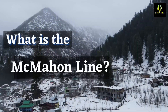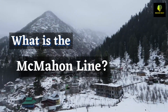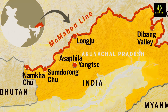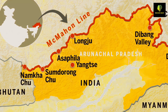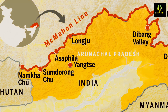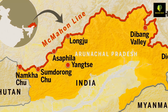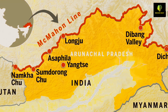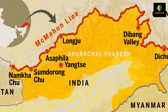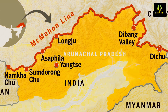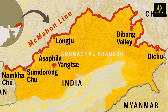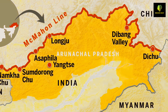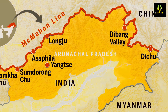So what is the McMahon Line? The McMahon Line is a boundary between China and India in the eastern sector. It specifically represents the boundary between Arunachal Pradesh and Tibet, from Bhutan in the west to Myanmar in the east.